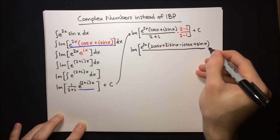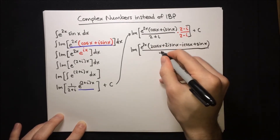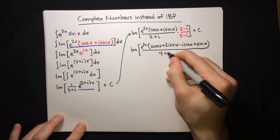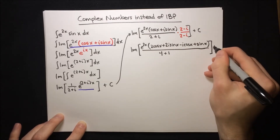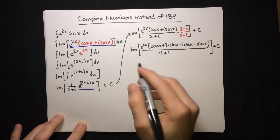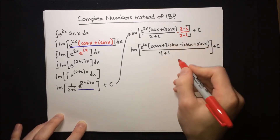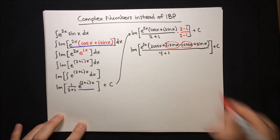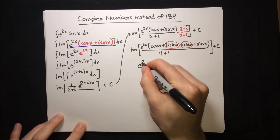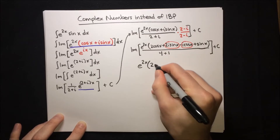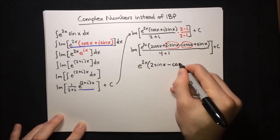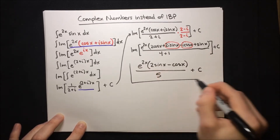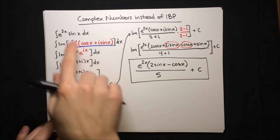And that's all over the difference of squares: 2 squared is 4, and then minus (3i)² turns into plus 1, so the denominator is 5. Then we take the imaginary part, keeping only the imaginary terms, and we get e to the 2x times (2 sin x minus cos x) over 5, plus our constant. And that is the value of this integral.